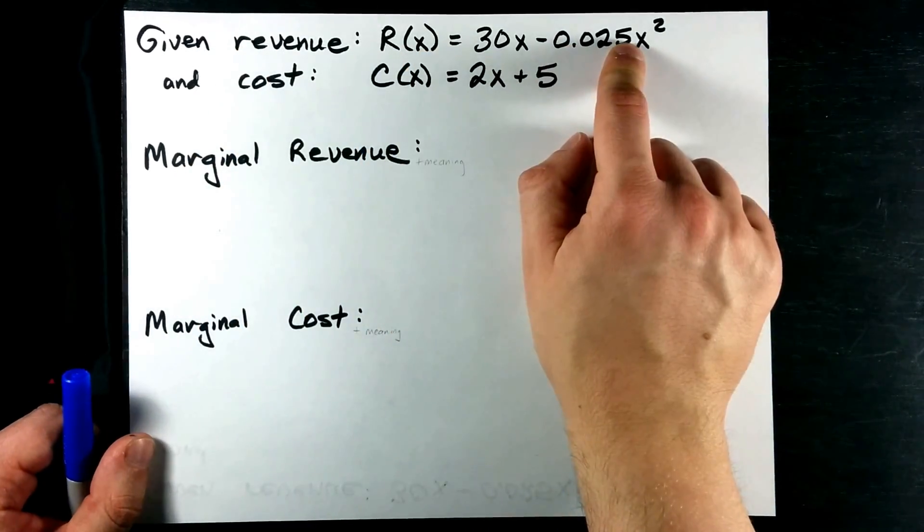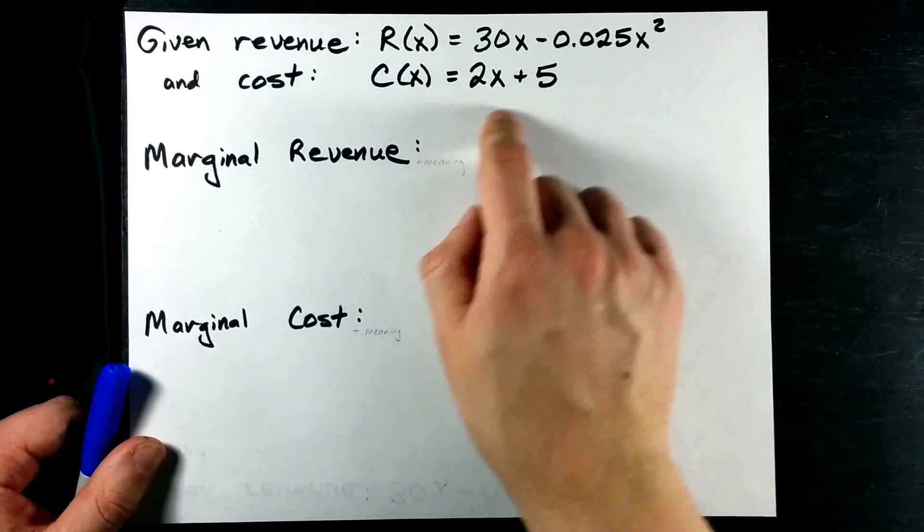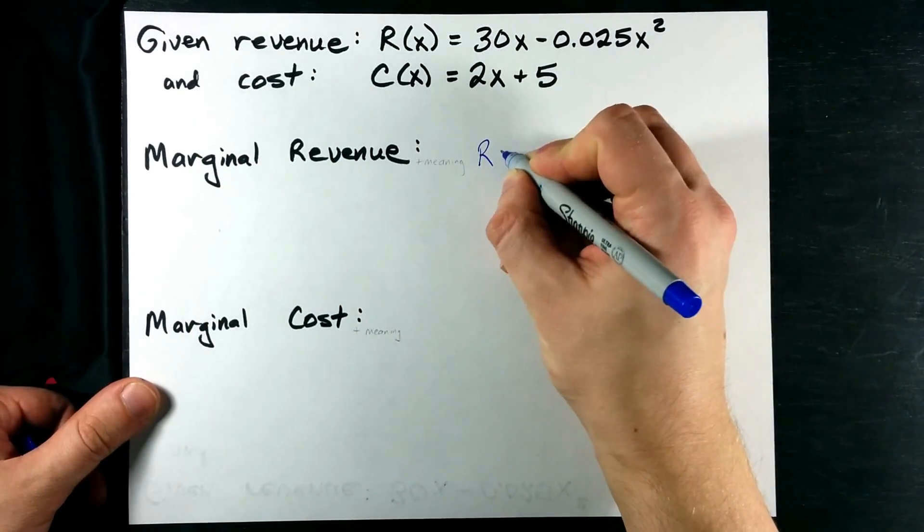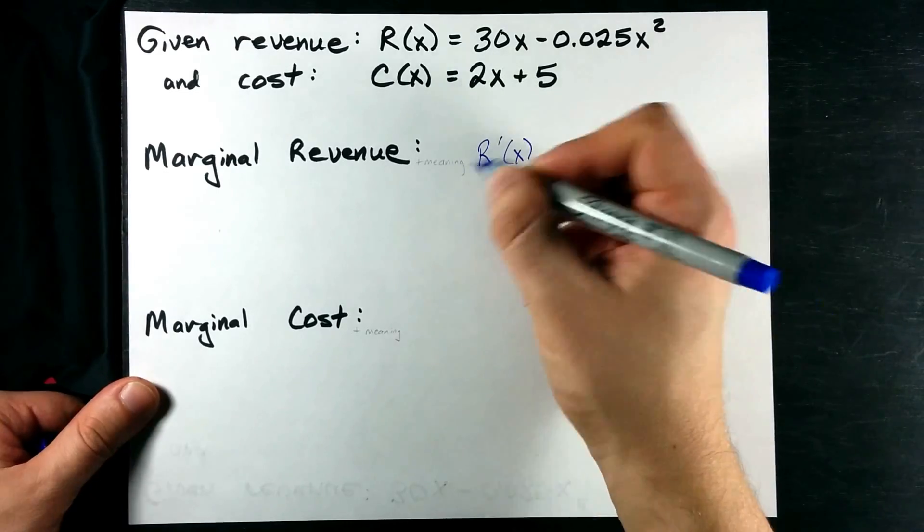If you're given a revenue function and a cost function, and you're asked for marginal revenue, marginal revenue is simply R prime or the derivative.